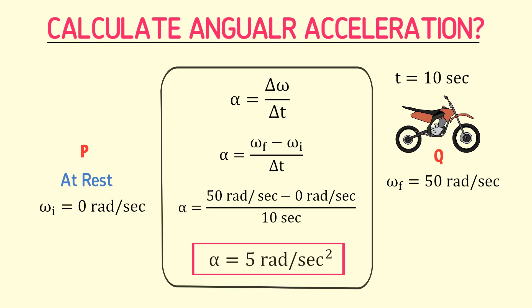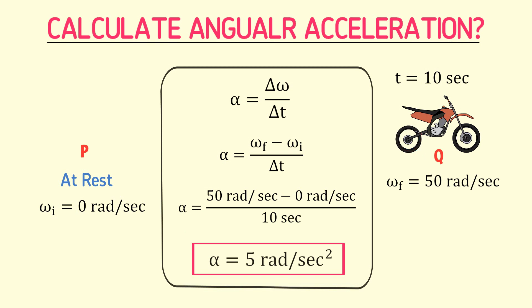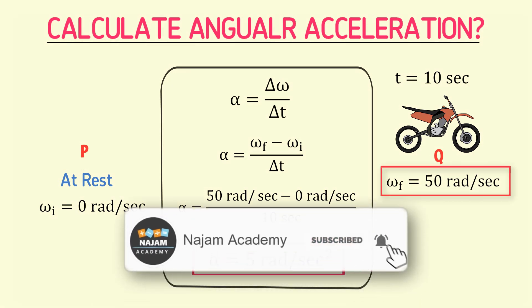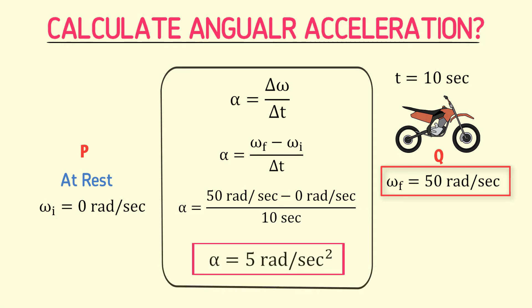Let me ask you a question: what is meant by an angular acceleration of 5 radians per second squared of the wheel? The answer is that every second, the angular velocity of the wheel is changing at a rate of 5 radians per second. That is why the angular velocity of the wheel reached 50 radians per second in 10 seconds. I hope you have learned the concept of angular acceleration.